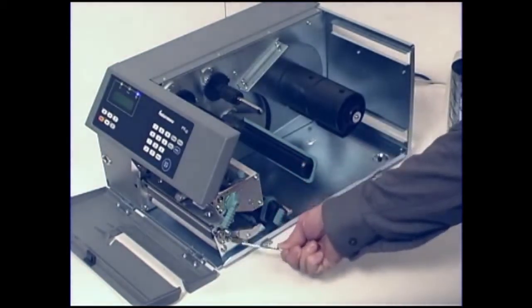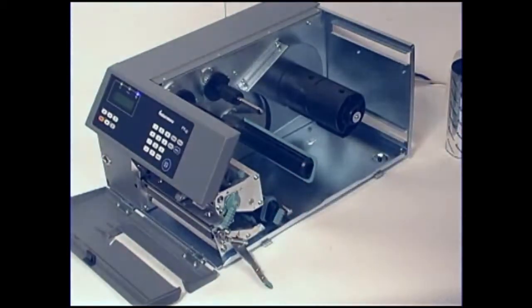If you are installing the ribbon on a PX6i model, you will need to pull down the locking handle. This does not apply to the PX4i or PA30 models.